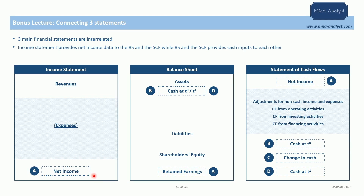The income statement is the statement where we can reach the net income for a given financial period. Net income is linked to both the balance sheet and to the statement of cash flows. In the balance sheet, the net income for a given financial period is added to the retained earnings.